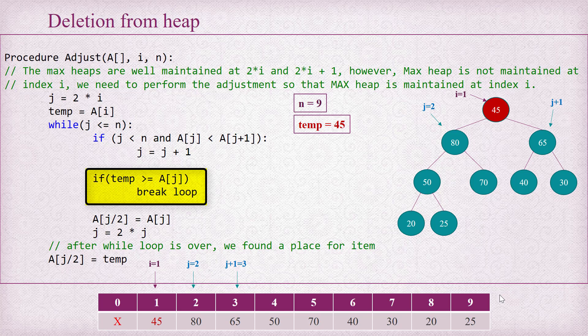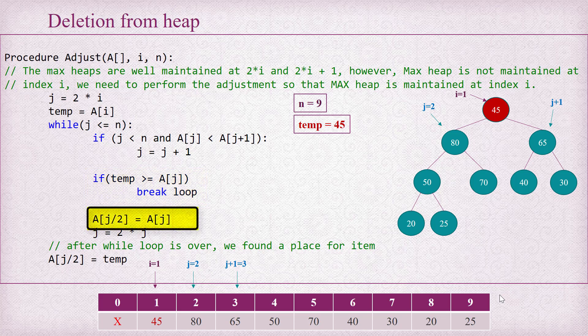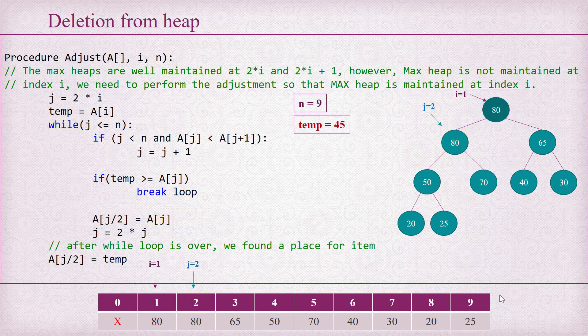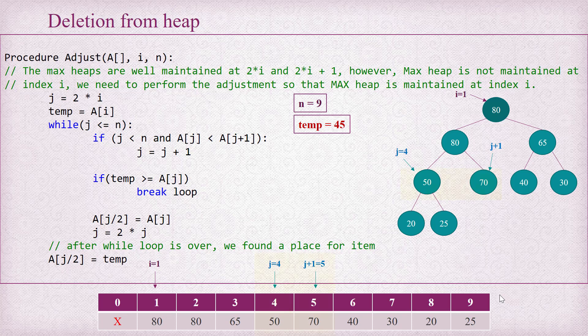Therefore, we copy the content of index j to index j/2 — that is, 80 is copied to index 1 — since j is 2 and the parent of j is at j/2 which is index 1. After this copy, we update j with 2*j, that is j is moved to its left child. Now j is 4 and the sibling of j is 5.